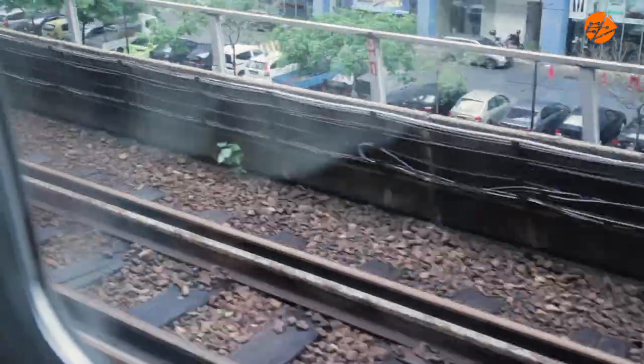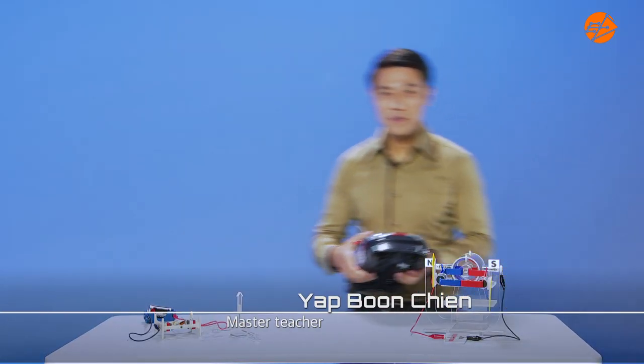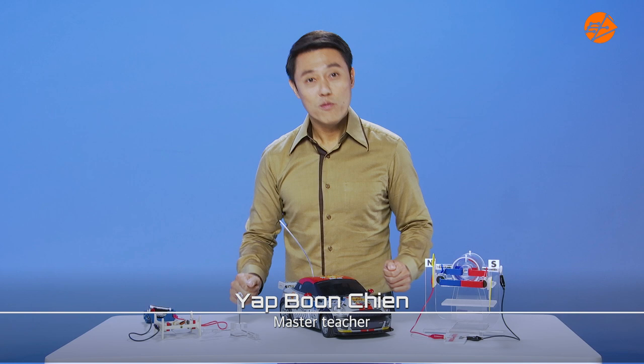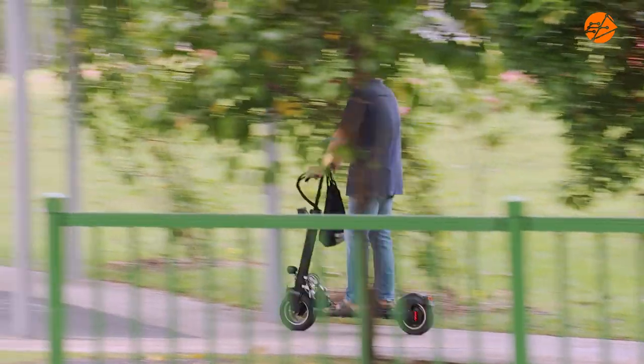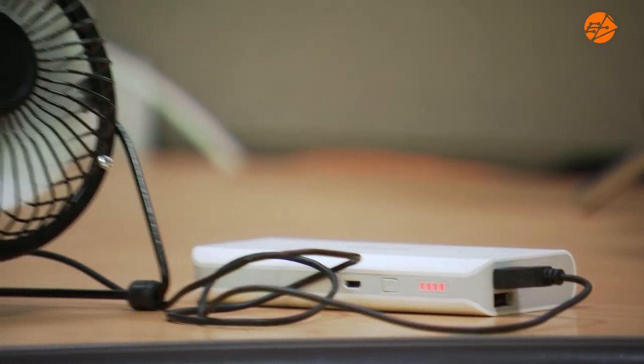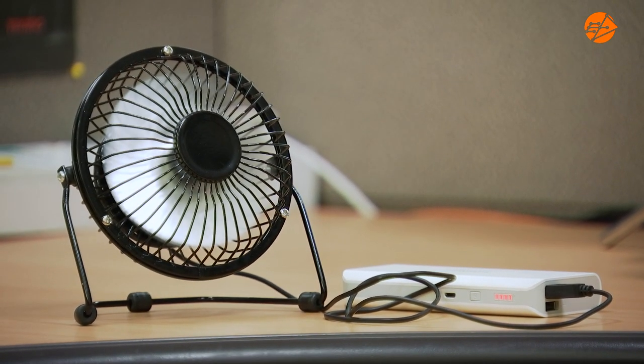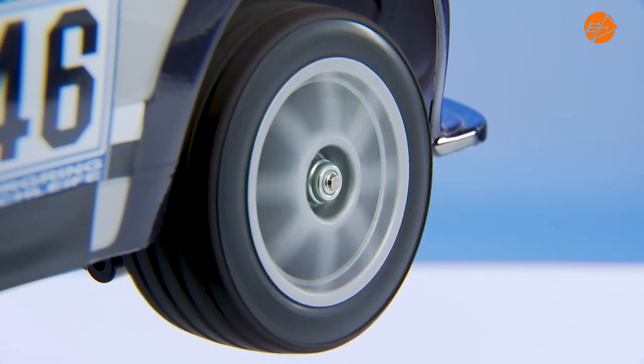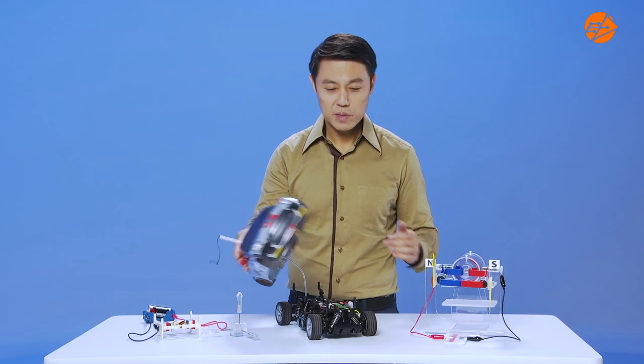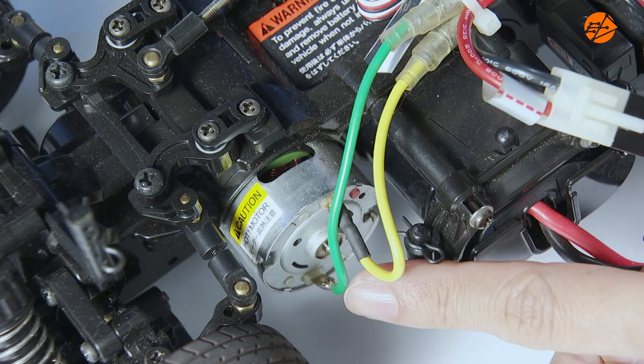We interact with many objects that operate on electricity. For example, we know that the radio control car, electric scooter, MRT train and USB fan all run on electricity. How does electricity cause the fan blades to spin or wheels to turn? It is the turning effect of the DC motor inside.